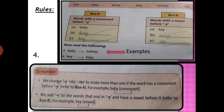Monkey and day — both words end in Y, and before that Y there is a vowel. So when we want to make them plural, we add S only. We are adding S only because the letter that comes before Y is a vowel. This is rule number 4.